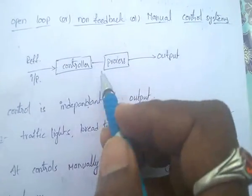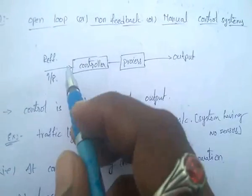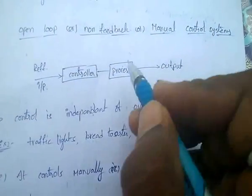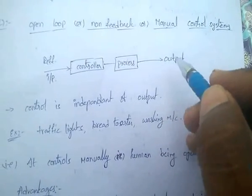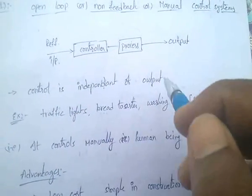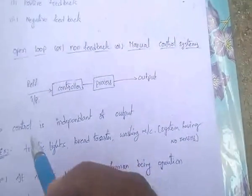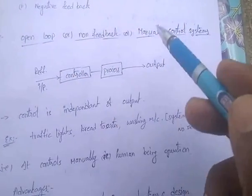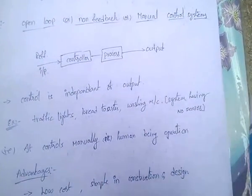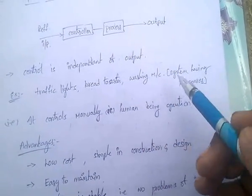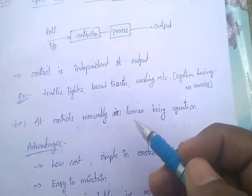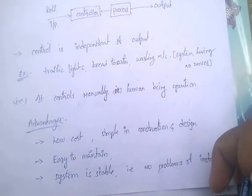In an open loop control system, there is a controller and a process. The reference input produces an output — but control is independent of the output. There is no feedback. Examples of open loop control systems include traffic lights, bread toasters, and washing machines — systems having no sensors.